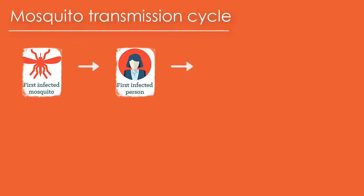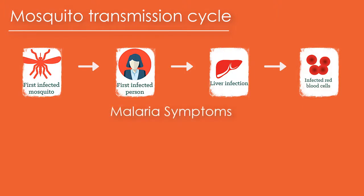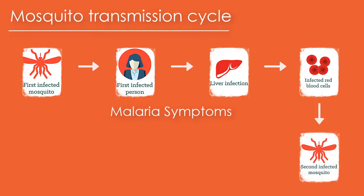The parasites then travel to your liver, where some types can lie dormant for as long as a year. When the parasites mature, they leave the liver and infect your red blood cells — this is when people typically develop malaria symptoms. If an uninfected mosquito bites you at this point in the cycle, it will become infected with your malaria parasites and can spread them to the next person it bites.